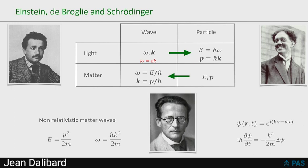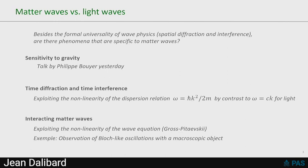And I would like to start my talk by the following question. Besides this formal universality of wave physics, I mean, we will get spatial diffraction, spatial interference, both with light and matter, are there phenomena that are specific to matter waves, that are difficult to reproduce for light waves? And you can think of many of them, and I would be happy to discuss that during the discussion session, but here I just listed three of them.